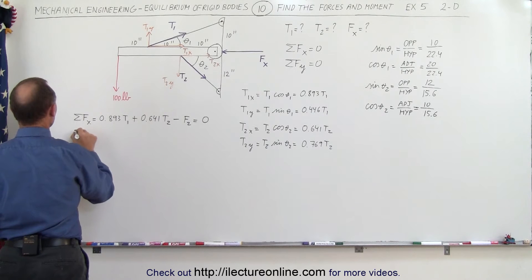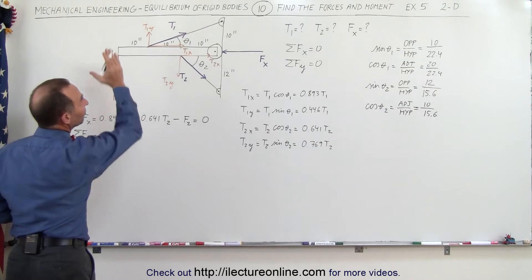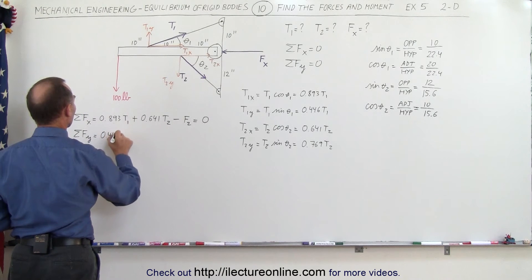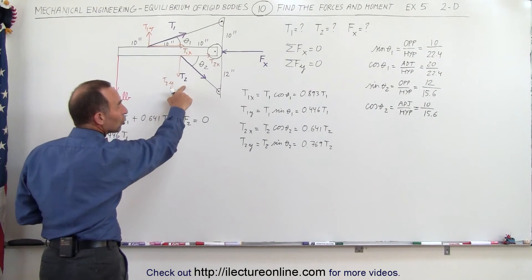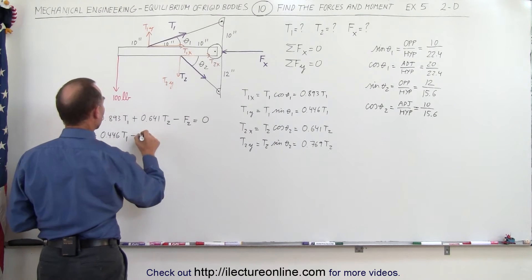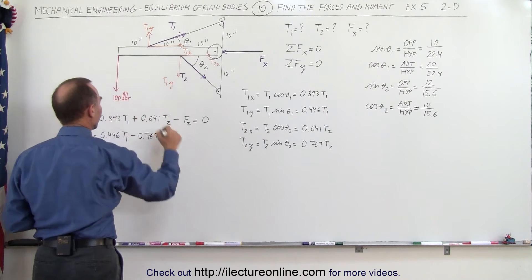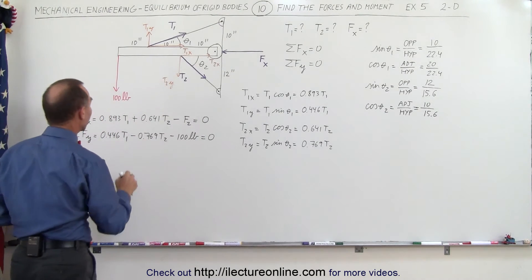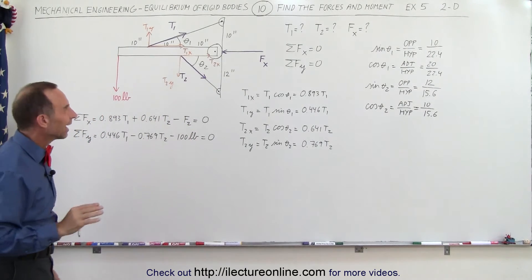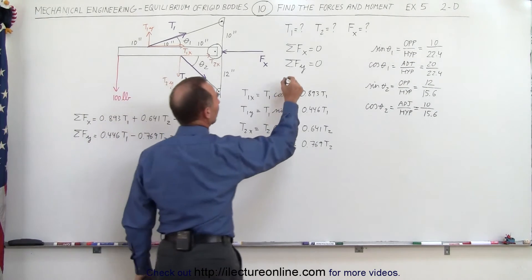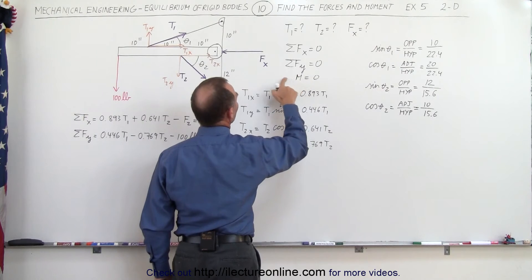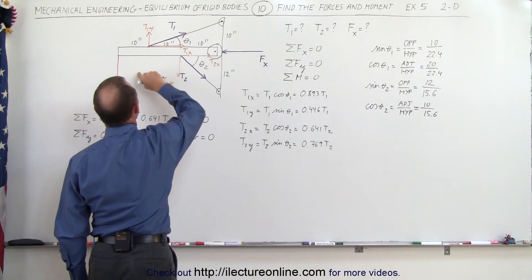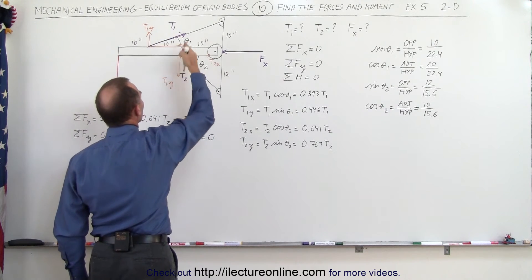The sum of all forces in the y-direction also adds up to zero: positive T1y is 0.446 T1, negative T2y is minus 0.769 T2, and negative 100 pounds, all summing to zero. However, we have three unknowns and only two equations, so we need the sum of all moments adding up to zero as well. We'll take moments about the wheel contact point from the 100-pound load, T1y, and T2y.